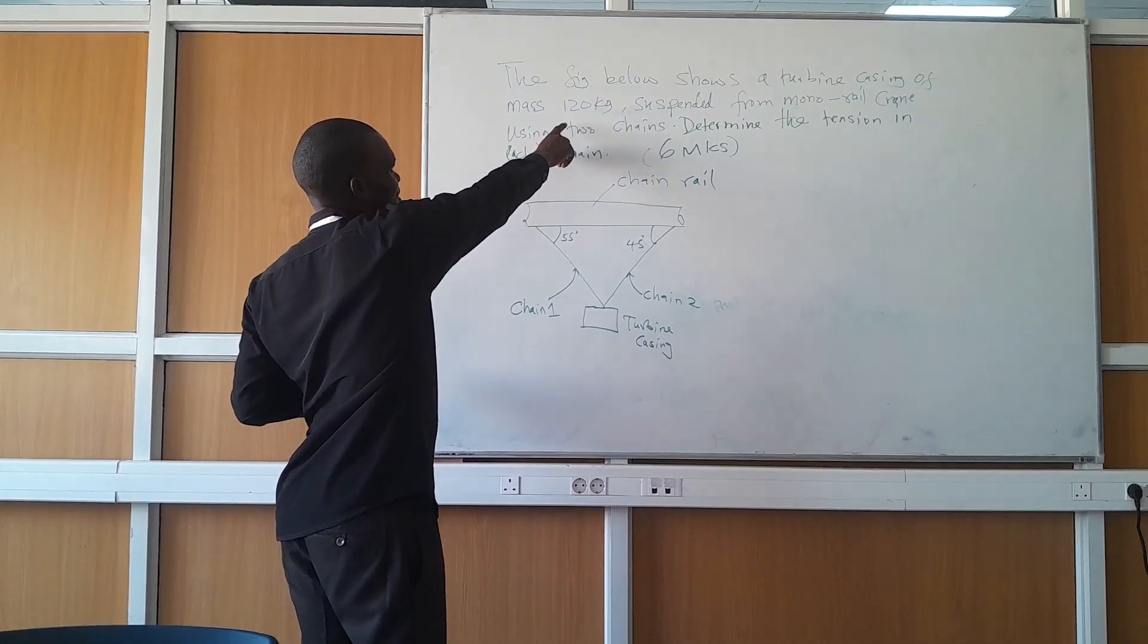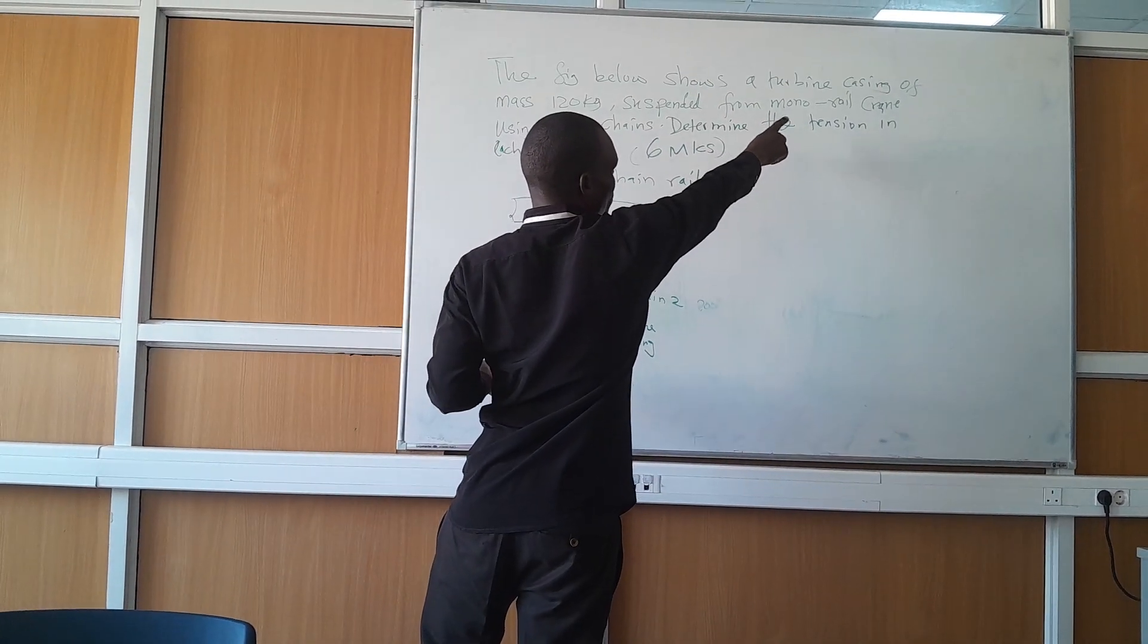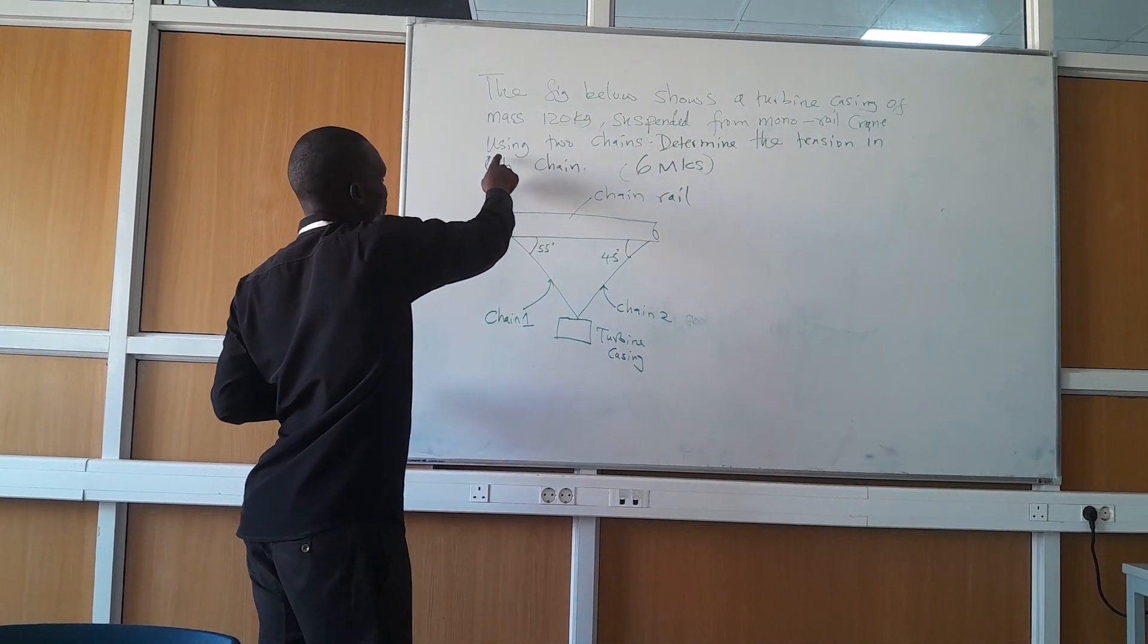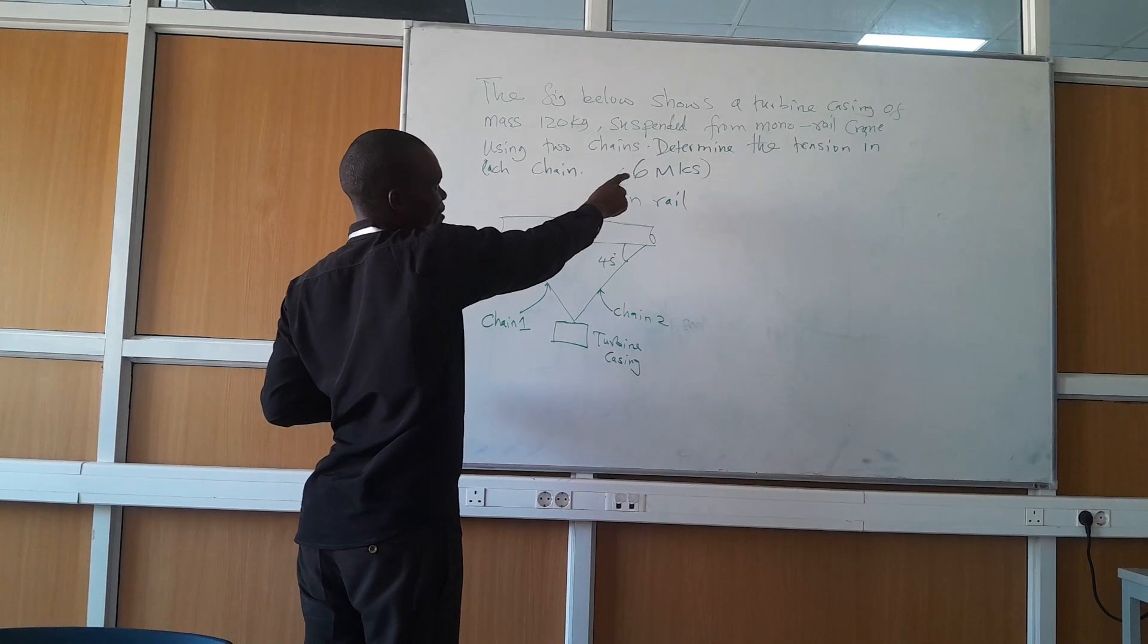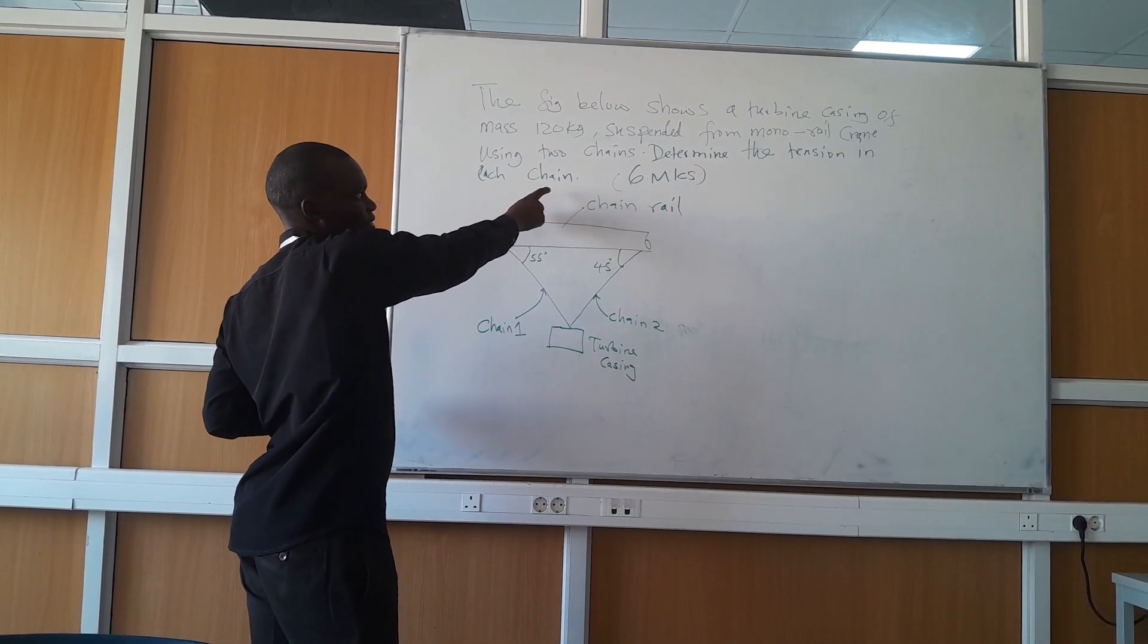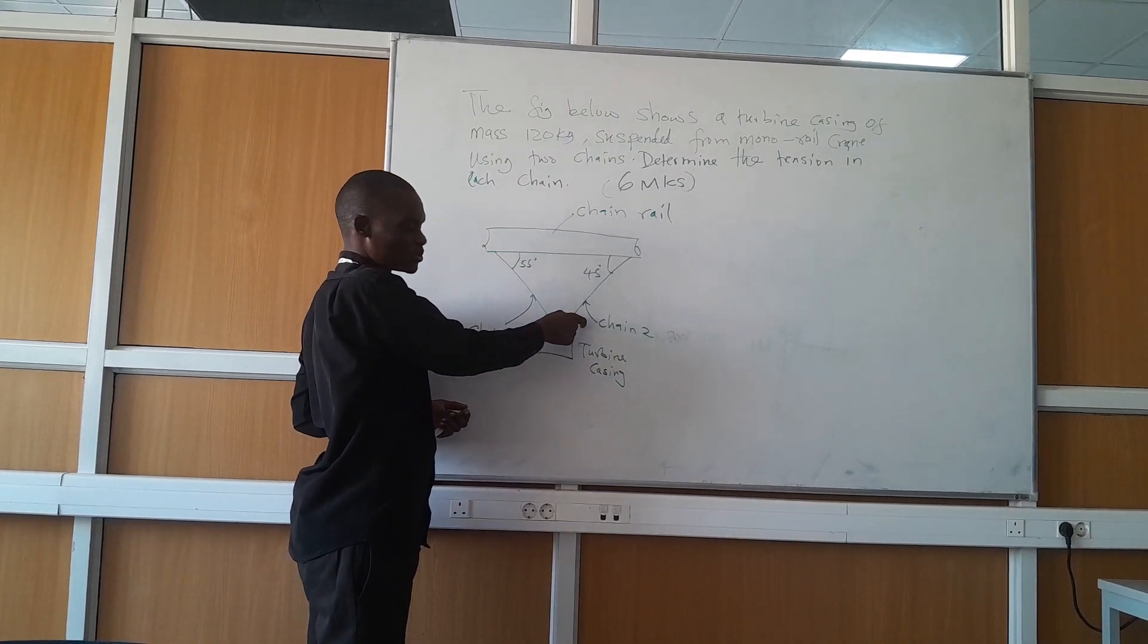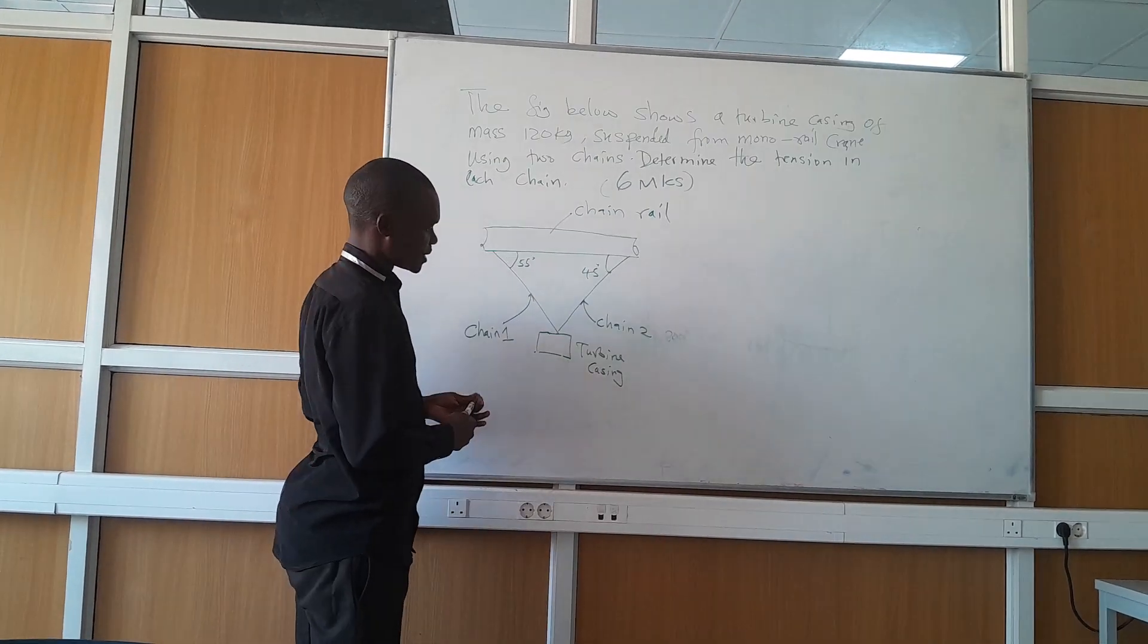A turbine of mass 120 kg is suspended from a motor rail train using two chains. Determine the tension in each chain. You have chain one, you have chain two, and you have the weight of the turbine.